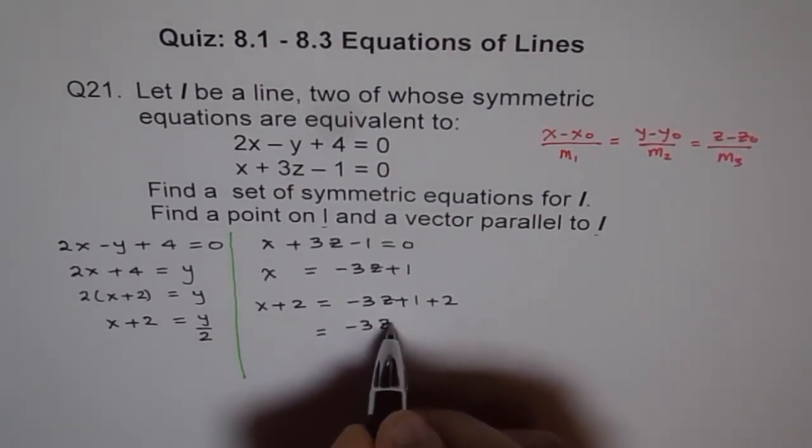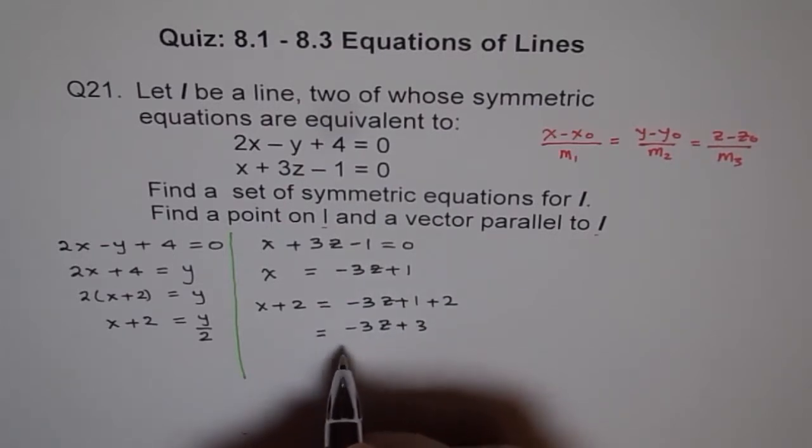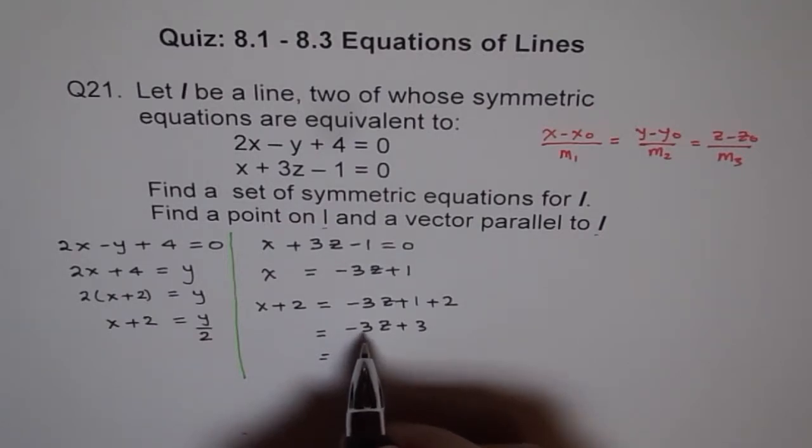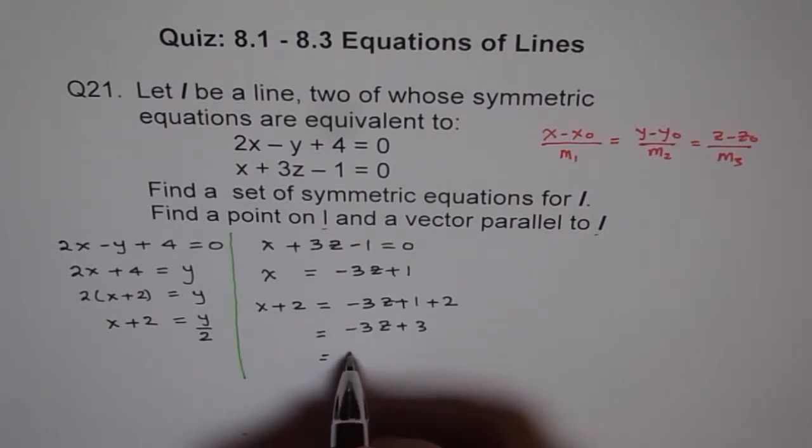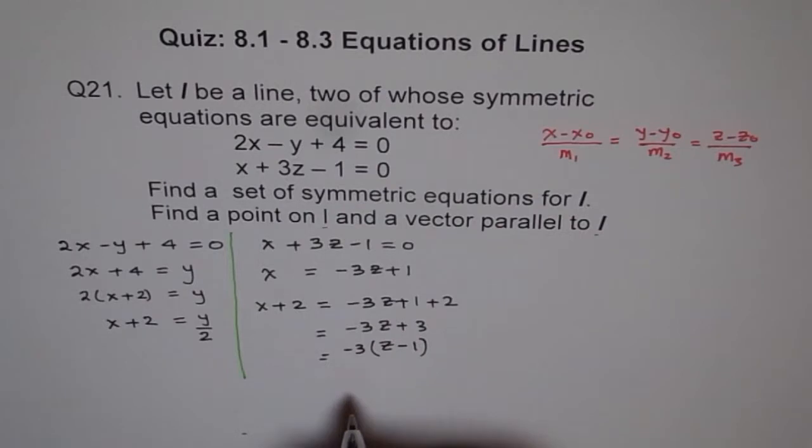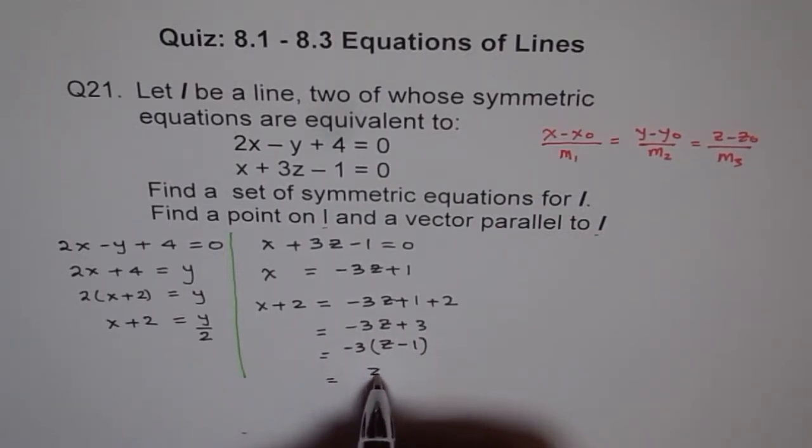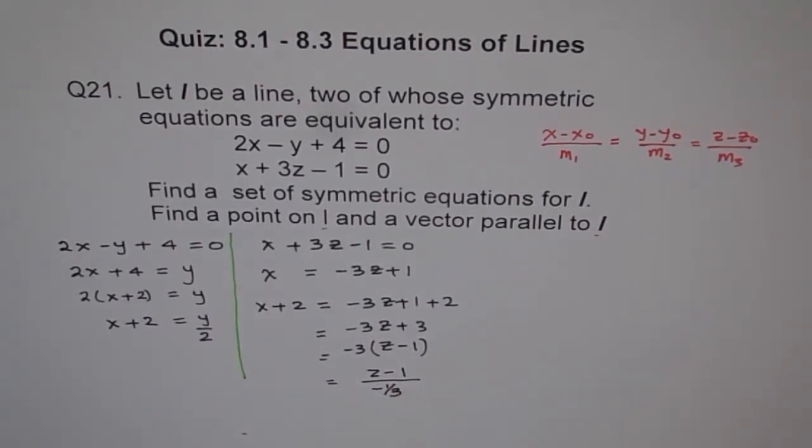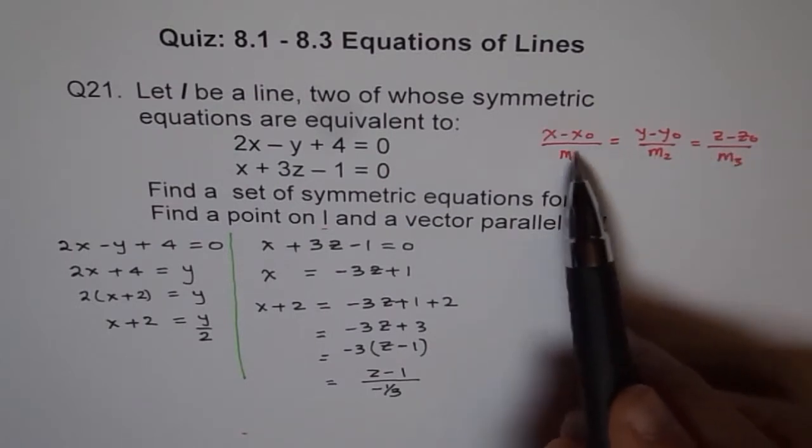We will go one more step here. Minus 3z plus 3. And now let's take 3 common. If we take minus 3 common, we will have this as positive coefficients. So let's take minus 3 common. And we get z minus 1. We could write this as z minus 1 divided by minus 1 over 3.